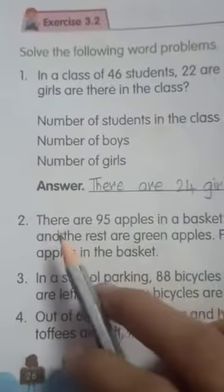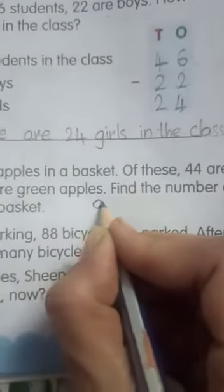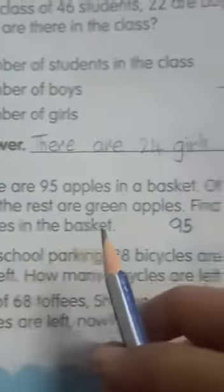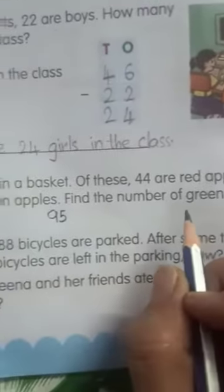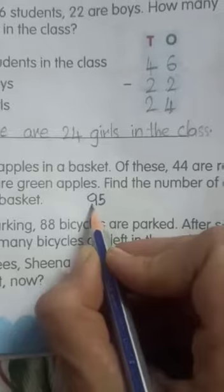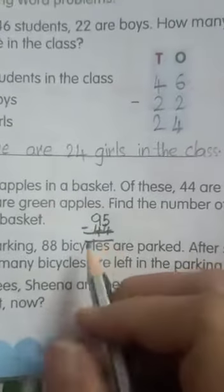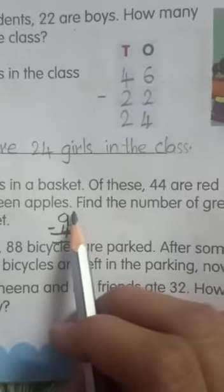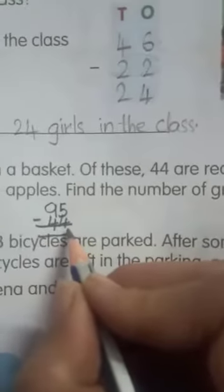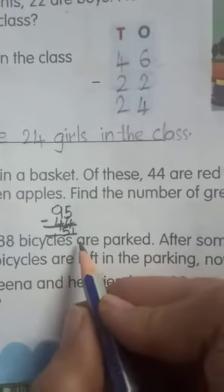Next, second question from exercise 3.2. There are 95 apples in a basket. Out of these, 44 are red apples and the rest are green apples. Find the number of green apples in the basket. Children, 44 are red apples and you have to find the rest of green apples. If you subtract this 44 red apples from all apples, you will get the green apples. 5 minus 4 is 1, and 9 minus 4 is 5. So there are 51 green apples in the basket.